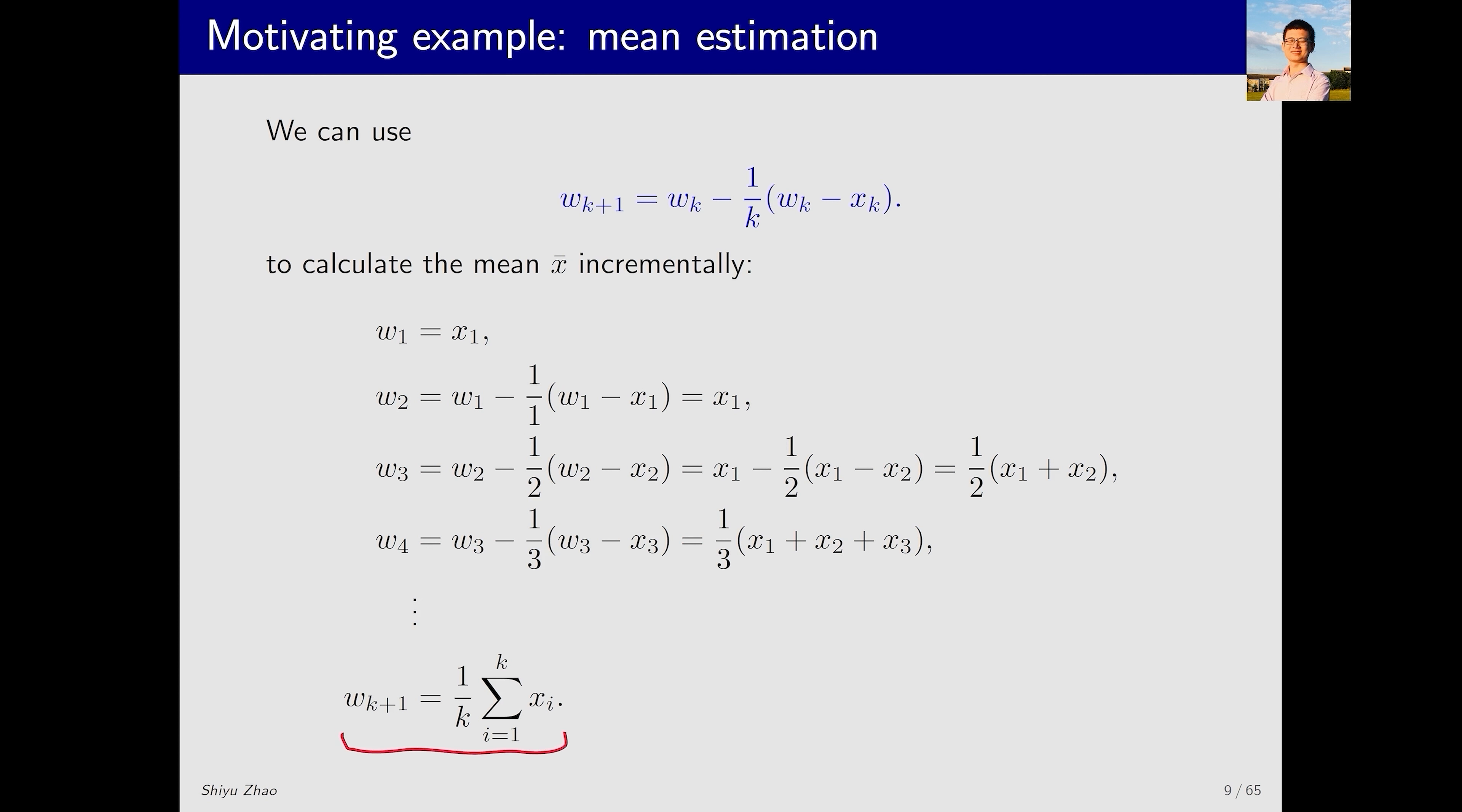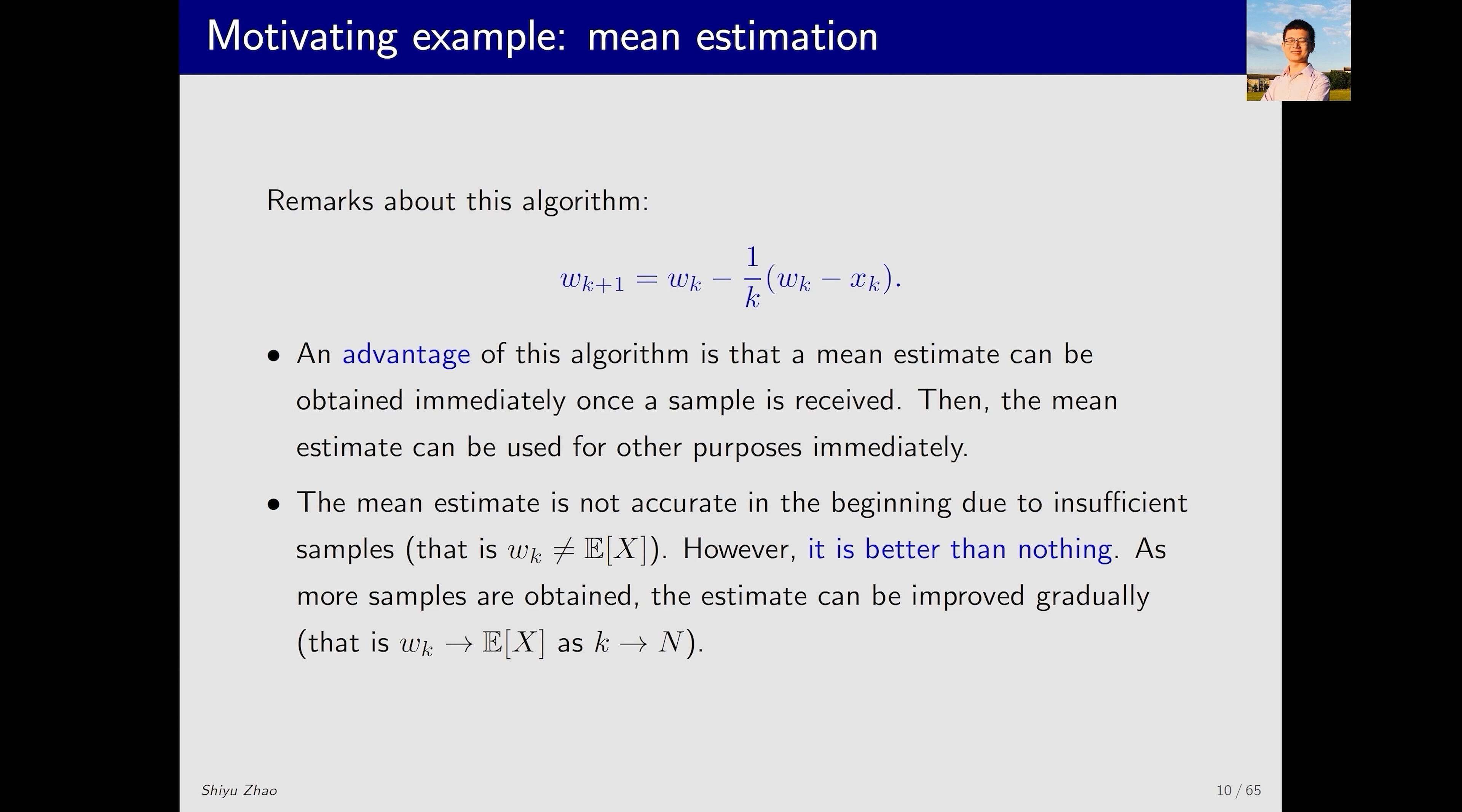Finally, w_{k+1} equals 1 over k times the sum of the first k samples. In summary, this gives us an iterative algorithm for calculating the average. The advantage of this algorithm is that at step k, we do not need to summarize all the previous samples x_i and then calculate the average. With one step of calculation, we can get a new and correct average value.